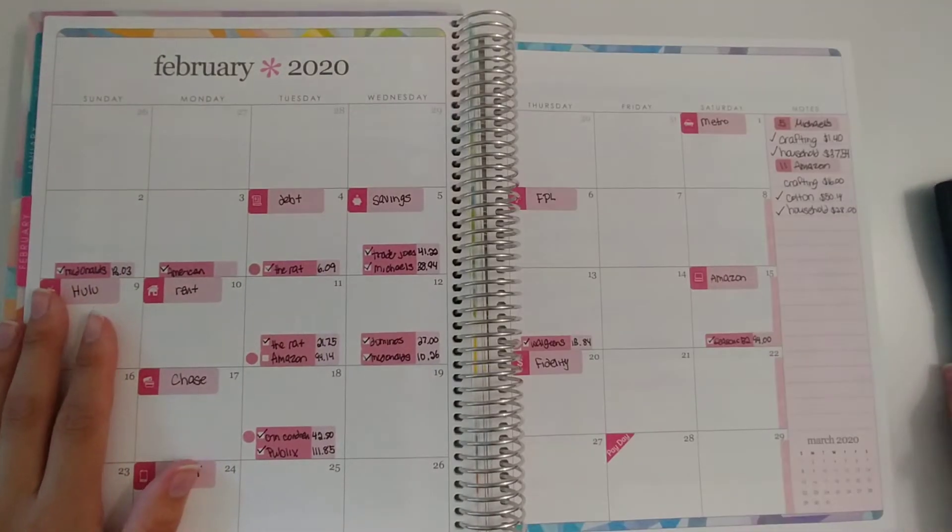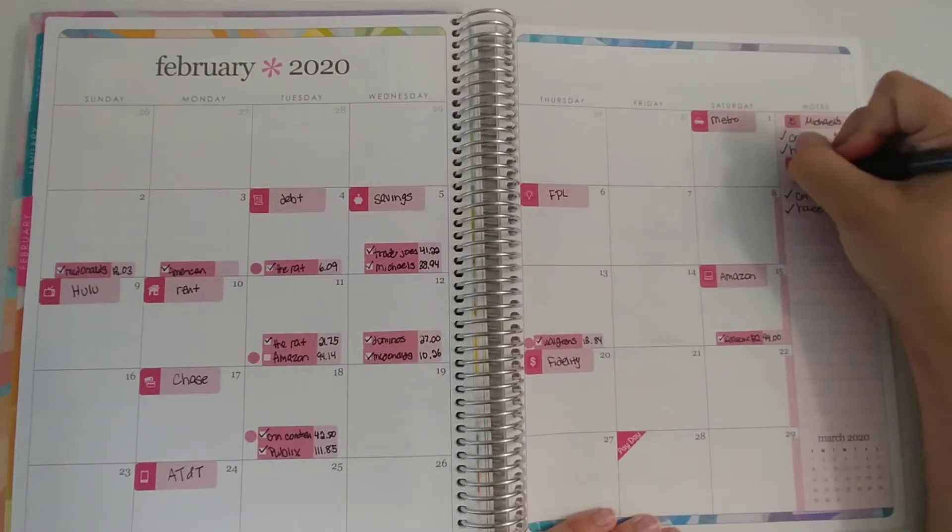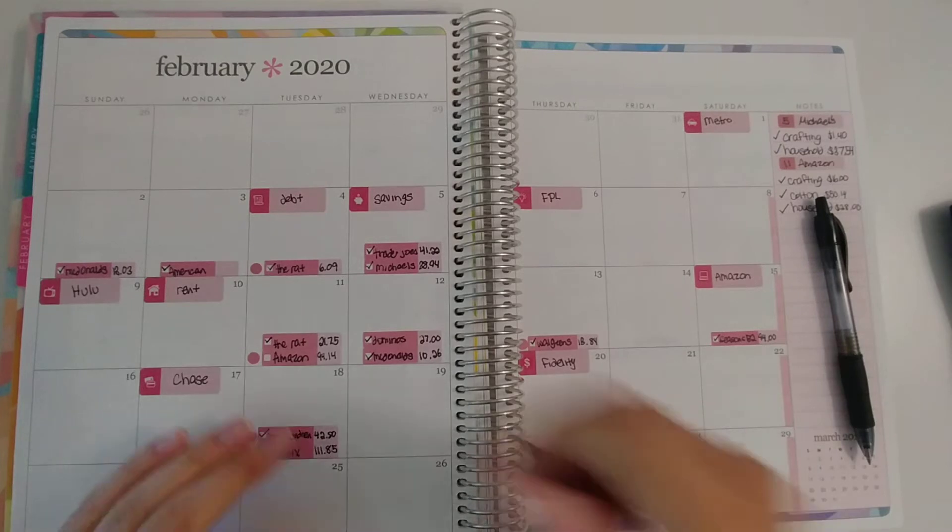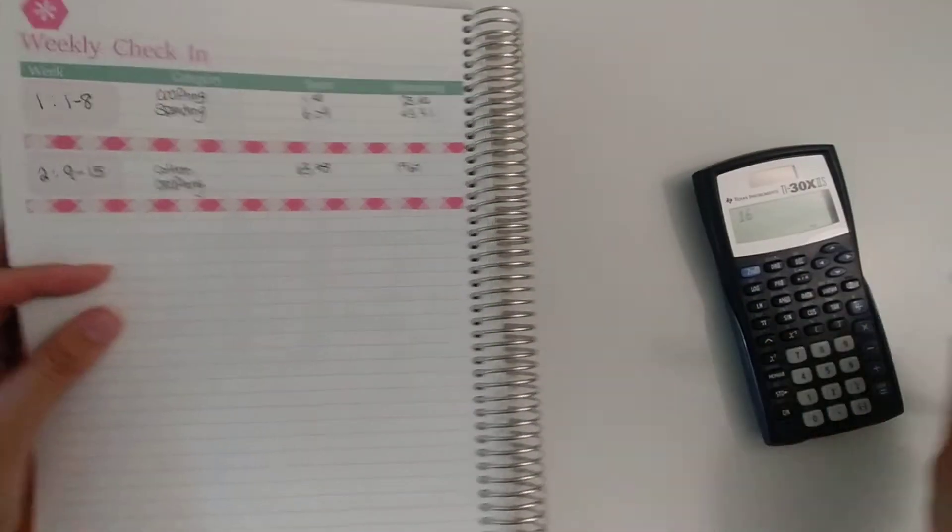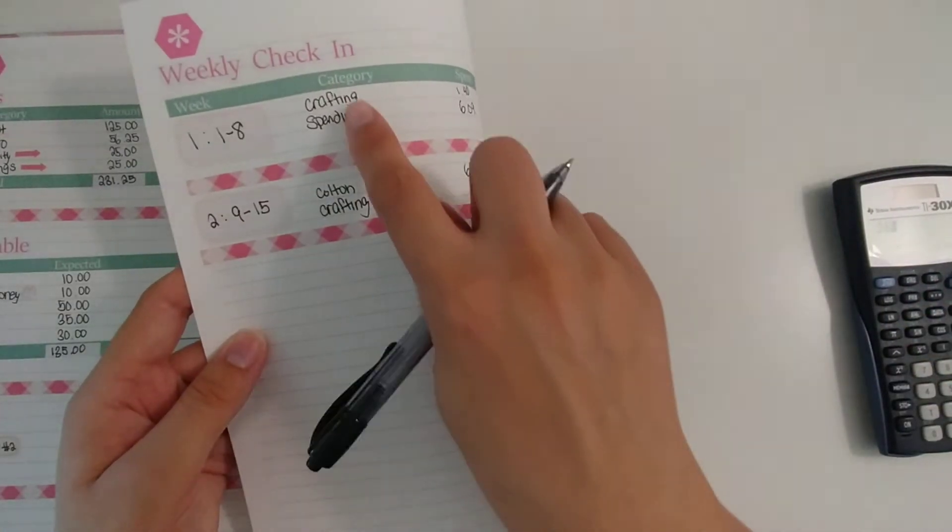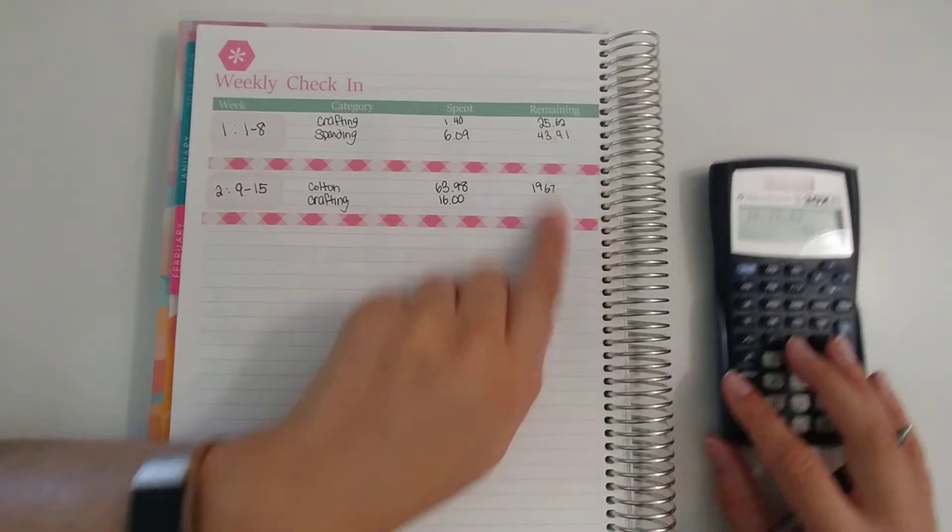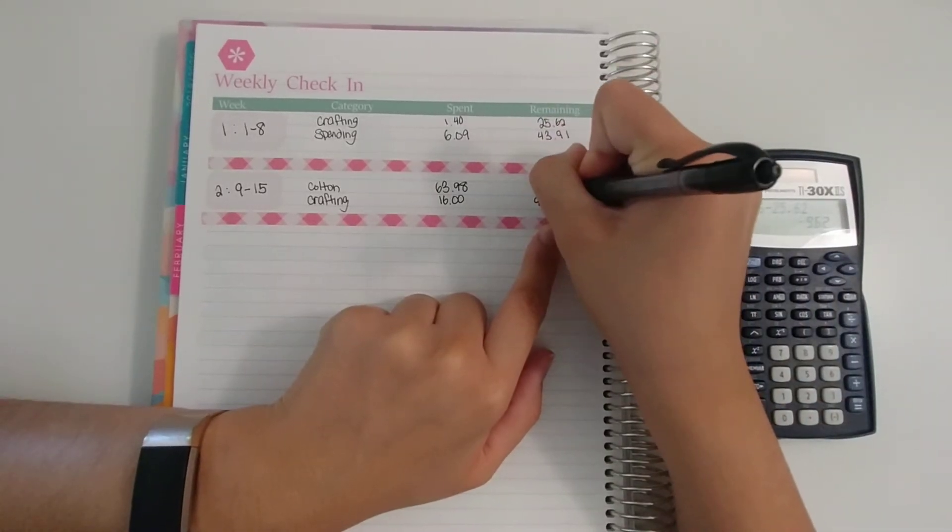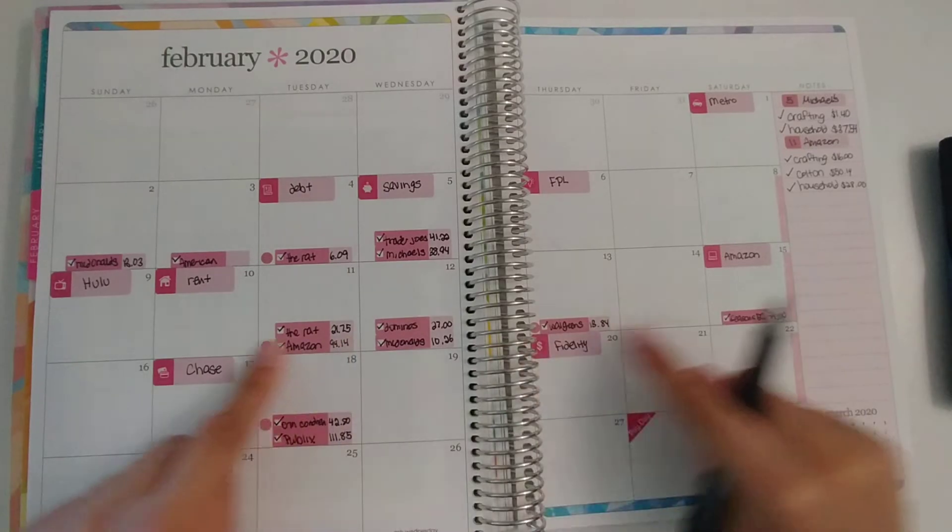And then moving on to crafting. Crafting I also had in the Amazon purchase for $16 even. So this Amazon purchase now has been fully recorded, so I'm going to check it off in the calendar. And that was all I had for crafting. So $16 even. I did spend some last week, so I had $25.62 remaining. So I have $9.62 left, which isn't terrible. So that leaves everything for this week has been checked off. So this planner has been updated.